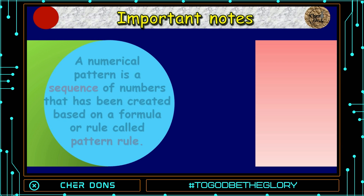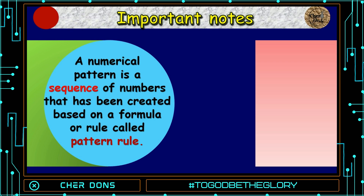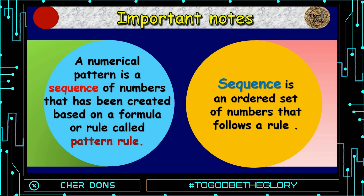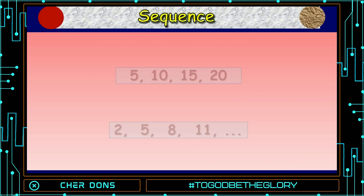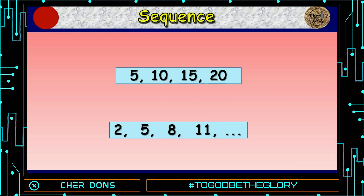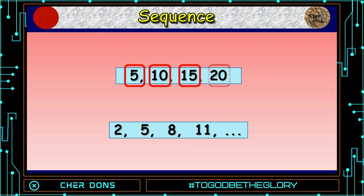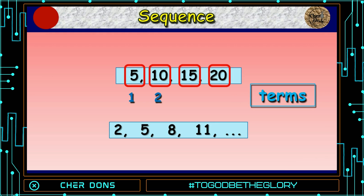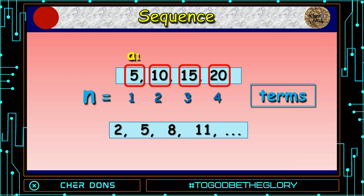A numerical pattern is a sequence of numbers that has been created based on a formula or rule called pattern rule. Sequence is an ordered set of numbers that follows a rule. For example: 5, 10, 15, and 20 — those are the terms in the sequence. 5 is your first term, 10 is your second term, 15 is your third term, and 20 is your fourth term. The order or number of terms in the sequence is denoted by N. 5 is represented by A sub 1, A sub 2 is 10, A sub 3 is 15, and A sub 4 is 20.